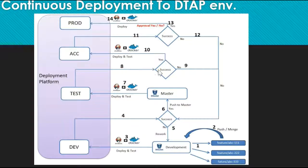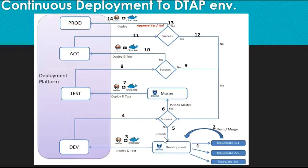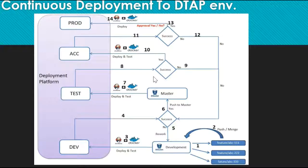If the test results are negative, the CICD pipeline will send an email to the developers indicating that changes need to be made to the application. Developers will pull the source code from the development branch, make the necessary changes, push back to development, and then from there go back to master. The application will be tested again in the test environment. Once the application is running successfully in the test environment, it will be tested in the acceptance environment.